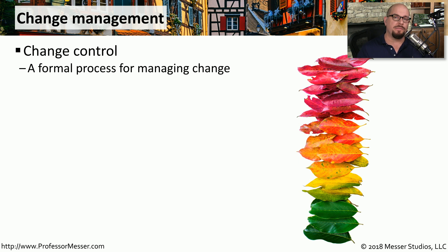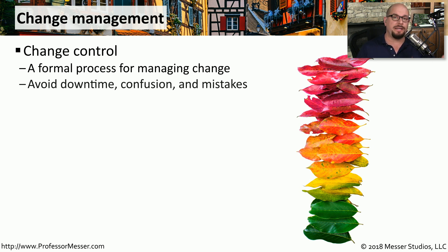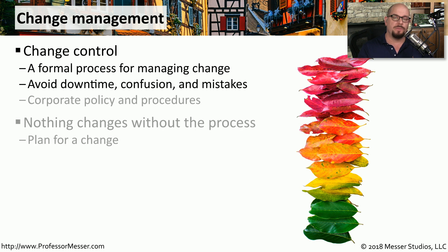One of the reasons we have this formal troubleshooting flow chart is because of change control. Change control is a way that we can manage any changes that might occur in our environment. This is very commonly seen in organizations that would like to minimize the amount of downtime and mistakes that might occur when a change takes place. When you're at home, you can make changes to your operating system or local network without informing anyone else.